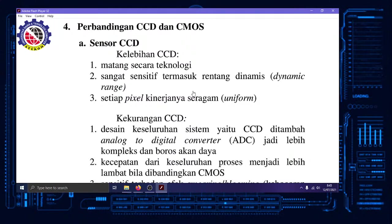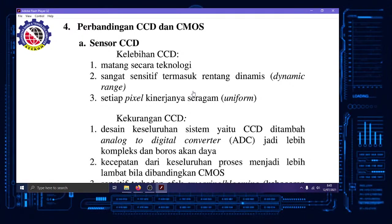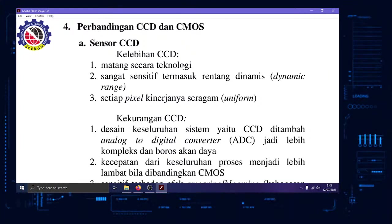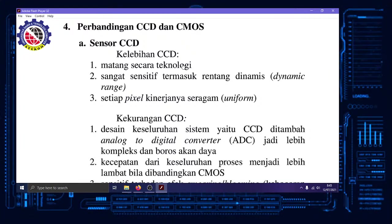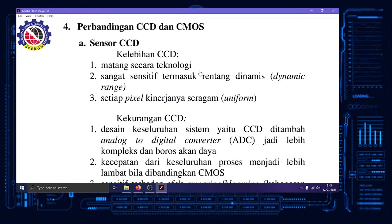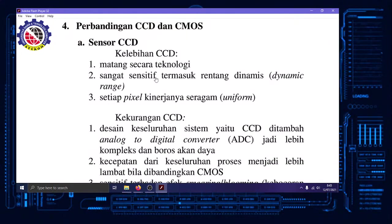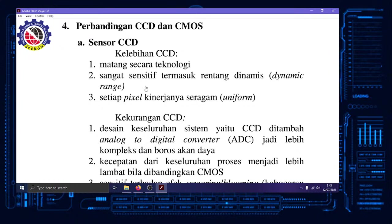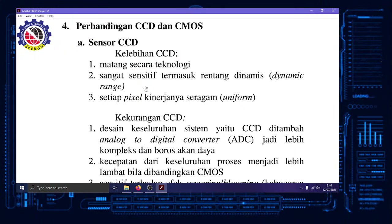Jadi CMOS hadir untuk memperbaiki atau menutup kekurangan CCD. Yang pertama mahal, yang kedua prosesnya lebih cepat. Tetapi CCD tetap masih punya kelebihan, teknologinya matang. Karena dulu pengembangannya memang benar-benar dipikirin, terpisah dari orang yang buat prosesor komputer. Kalau CMOS prosesnya hampir sama dengan orang membuat chip prosesor. Ini sangat sensitif terhadap warna, termasuk tentang dynamic range. Teman-teman sering lihat channel GadgetIn yang membahas kamera itu ngomong dynamic range bagus. Artinya yang terang itu tidak jadi putih, yang gelap tidak gelap banget. Jadi bagian gelap atau bayangan itu masih kelihatan detailnya.